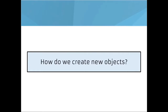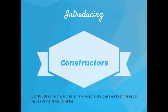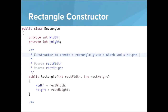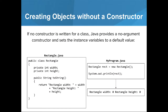The next question to create a class is: how do we create new objects? To do this, we're going to introduce constructors. Constructors help you create new objects of a class and set the initial values of our instance variables. We're going to pass in a width and a height, and set those instance variable values from that width and height. It's important to note that we can also initialize instance variables without a constructor. If a class does not have a constructor written, Java allows us to use the no-argument constructor to create an object for the class.